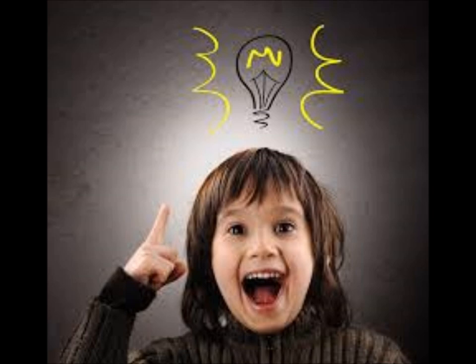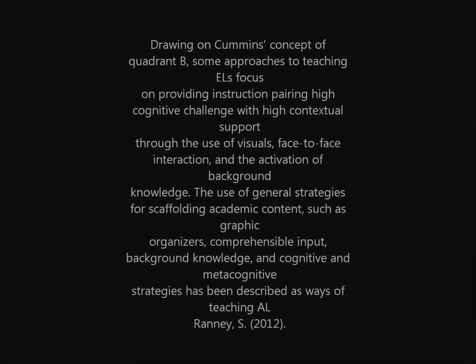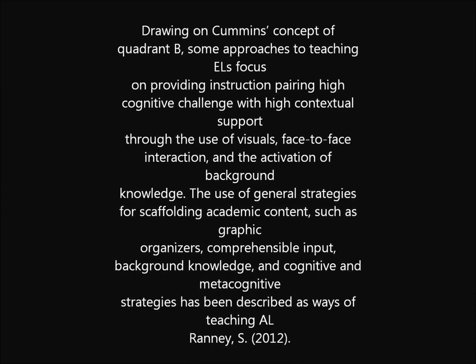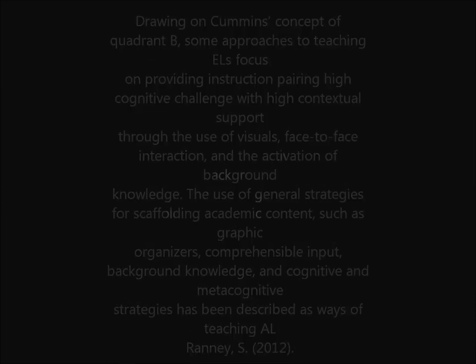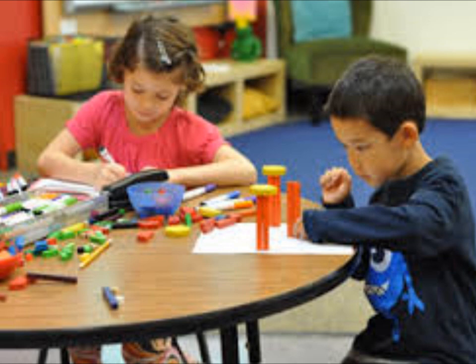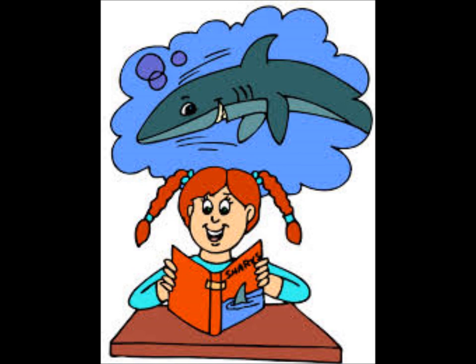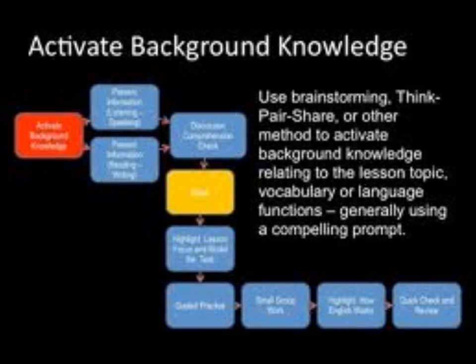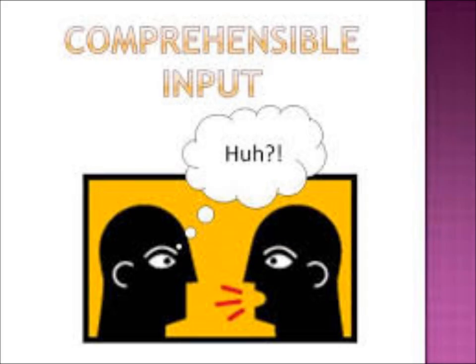An article titled 'Defining and Teaching Academic Language' by Susan Wainey says: drawing on Cummins' concept of Quadrant B, some approaches to teaching ELLs focus on providing instruction pairing high cognitive challenge with high contextual support through the use of visuals, face-to-face interaction, and the activation of background knowledge. General scaffolding strategies such as graphic organizers, comprehensible input, background knowledge, and cognitive and metacognitive strategies have been described as ways of teaching academic language.